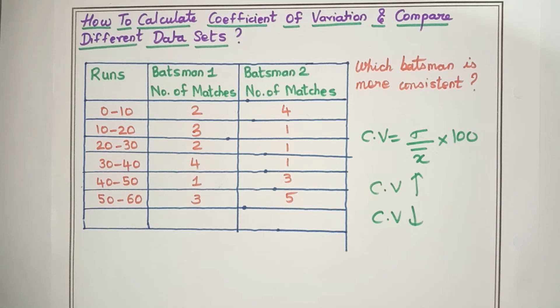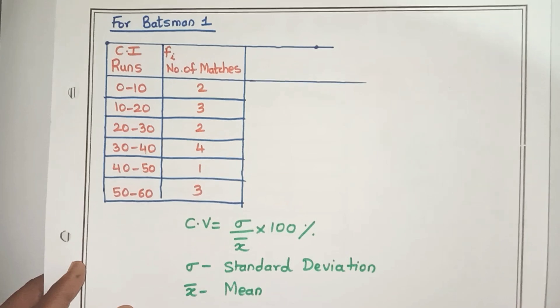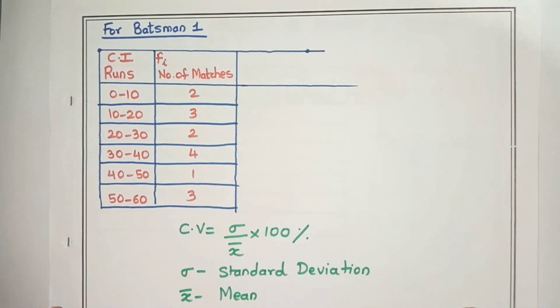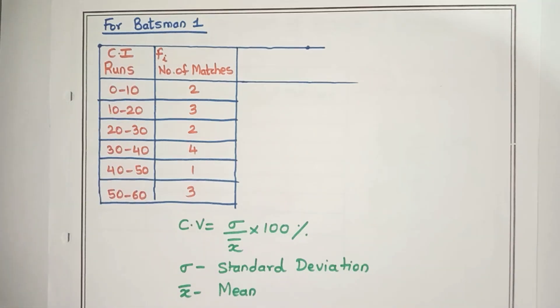So let's first find out the CV of both these batsmen. Here I have kept the data for the first batsman, number of runs is the CI and number of matches is the Fi. Now to find the CV, we need to know what is the standard deviation and the mean of the data.